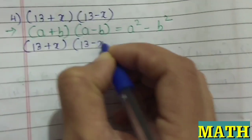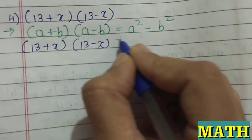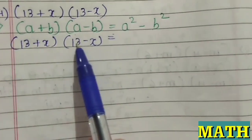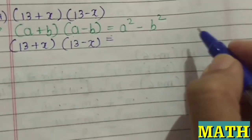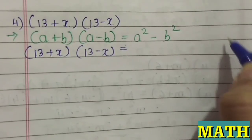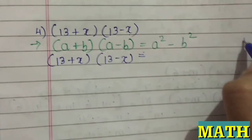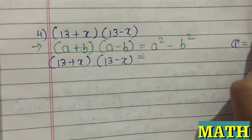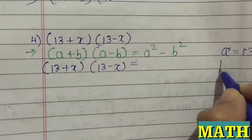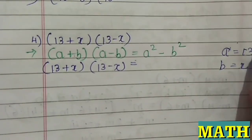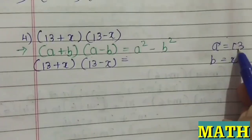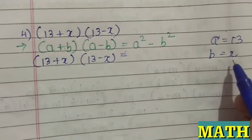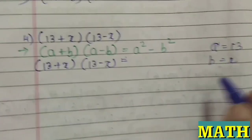This is how we change the expansion formula according to the type of sum given. Here, a=13 and b=x. So wherever there is 'a' in the formula, we substitute 13, and wherever there is 'b', we substitute x. As simple as that.